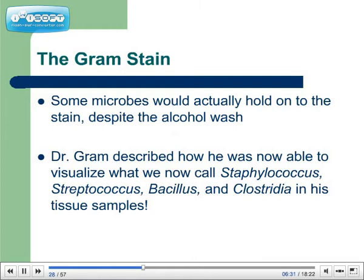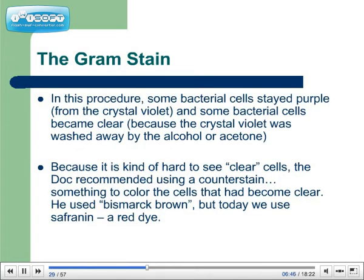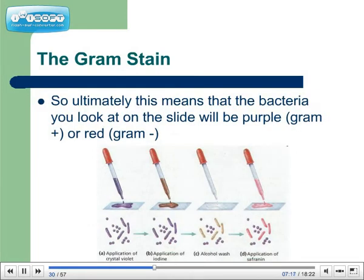However, Dr. Gram realized that if he then flushed it with alcohol or acetone, it came out of the body cells and it stayed in the bacterial cells — well, at least some of them. Some microbes would actually hold on to the stain despite the alcohol wash. Dr. Gram described how he was able to visualize what we now call Staphylococcus, Streptococcus, Bacillus, and Clostridia in his tissue samples. In this procedure, some bacteria stayed purple from the crystal violet, and some bacterial cells became clear because the crystal violet was washed away by the alcohol or acetone.